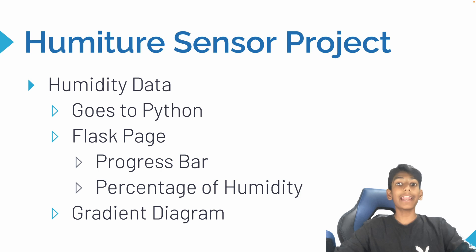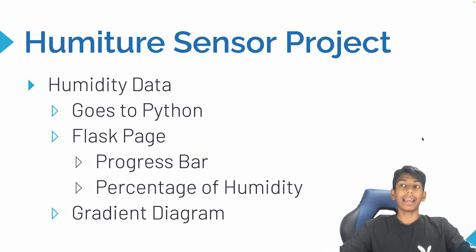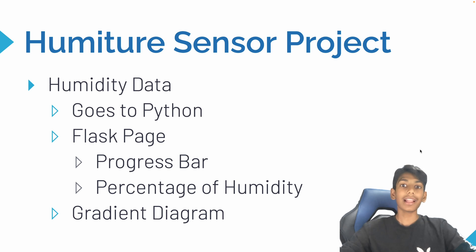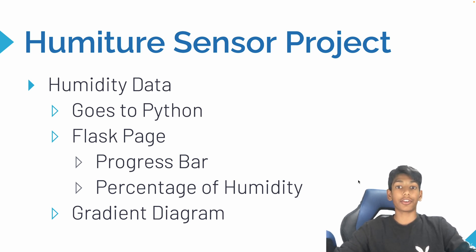The humiture sensor project used a Raspberry Pi with a humiture sensor that gets the temperature and humidity. I got all of that humidity data to go to Python — first we printed it out, and then I visualized the data with a Flask page and a progress bar showing the percentage of humidity in the air. Now I want to take it a step further.